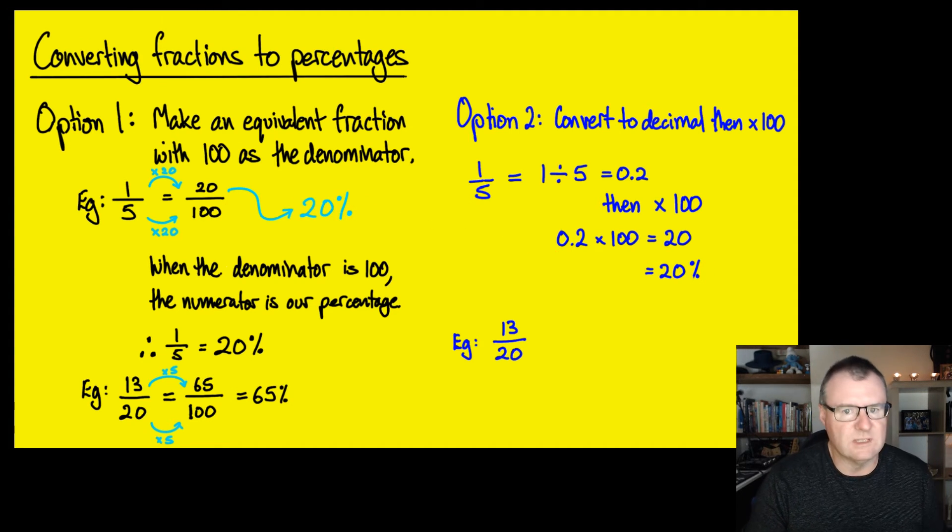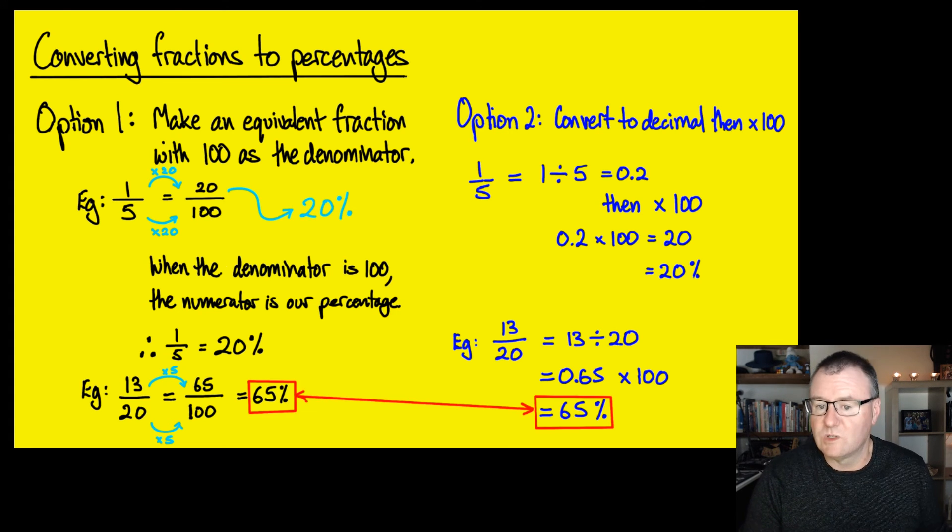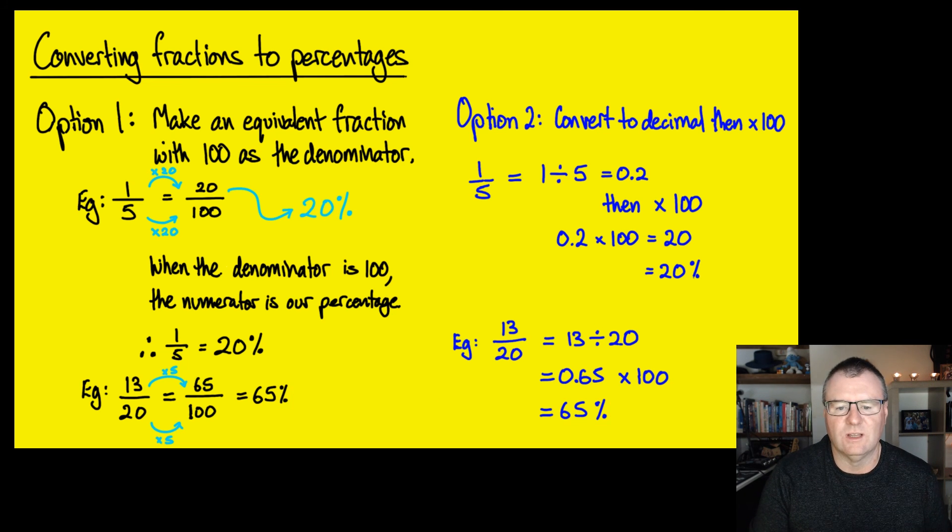Let's check the second example. Does this option 2 still work? 13 over 20 is the same thing as 13 divided by 20. Do that in my calculator, and I'm going to get 0.65, and now I just times that by 100, and I've got 65%, which was perfect. That's exactly what the previous one looked like as well.